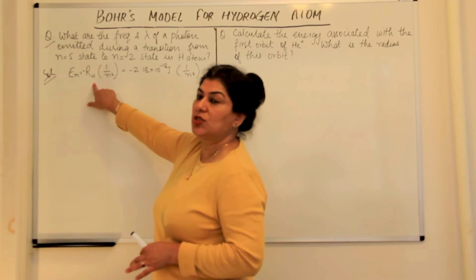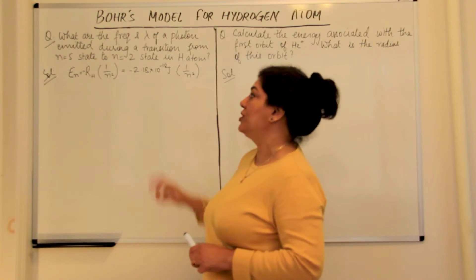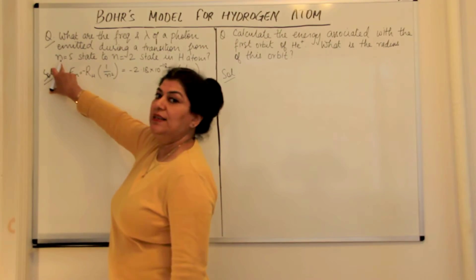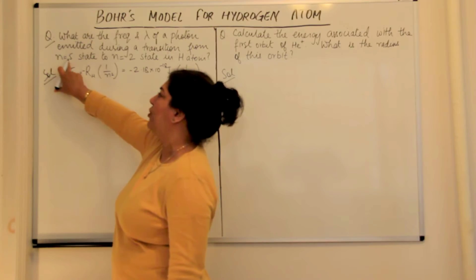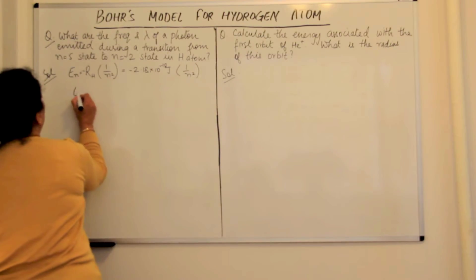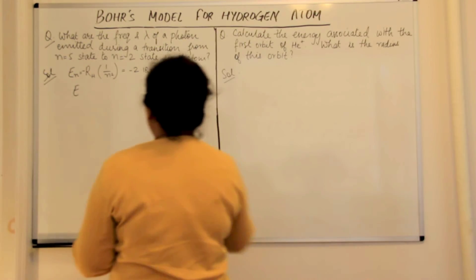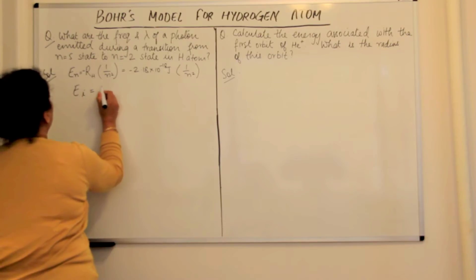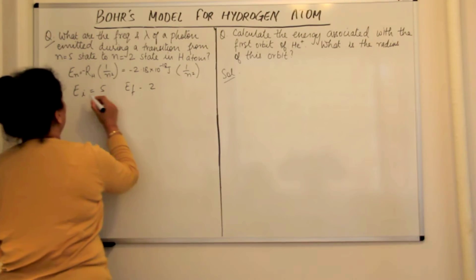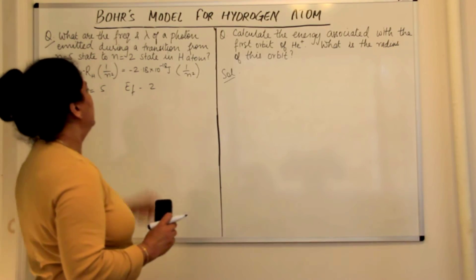The value of Rh, the Rydberg's constant for hydrogen, is minus 2.18 × 10⁻¹⁸ joules. In this question, we have been given that the initial energy state for the electron is the 5th energy state, and the final energy state is 2. Therefore, E initial corresponds to n = 5, and E final corresponds to n = 2.